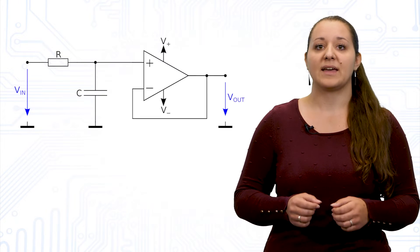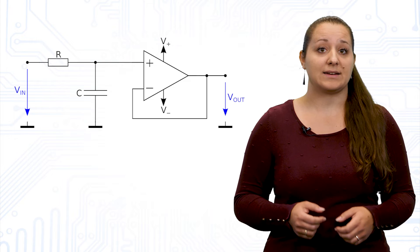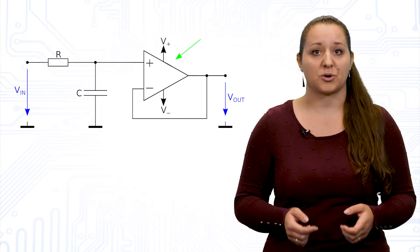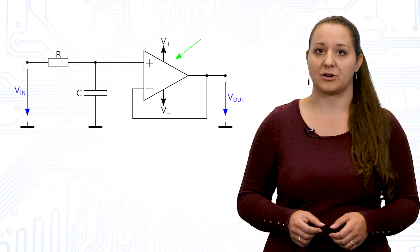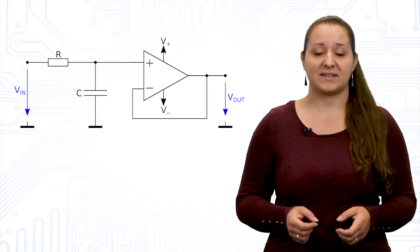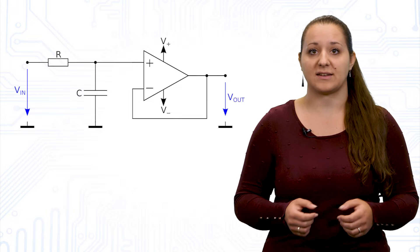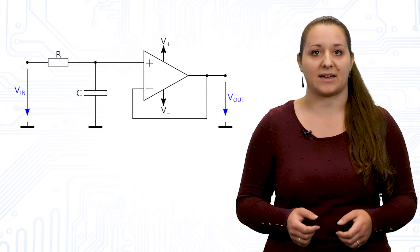In this video, we now turn our attention to a new world of filter circuits, active filters. Again, we can already conclude from the name that in addition to passive components, active components are also used in these circuits. In this video, we will discuss some simple active filter circuits as well as the advantages and disadvantages of using active components.